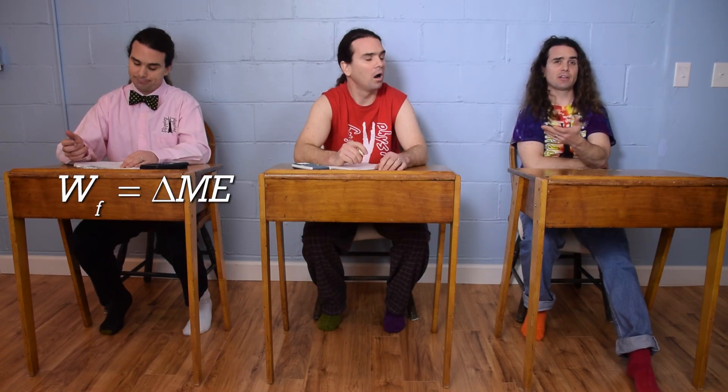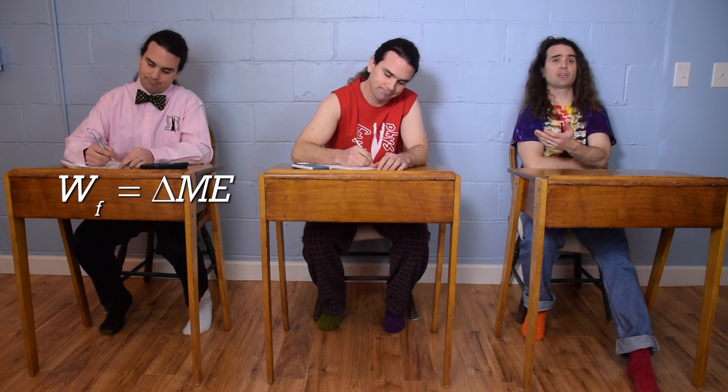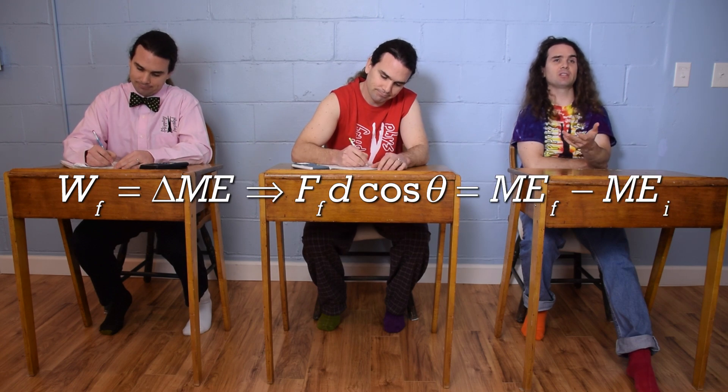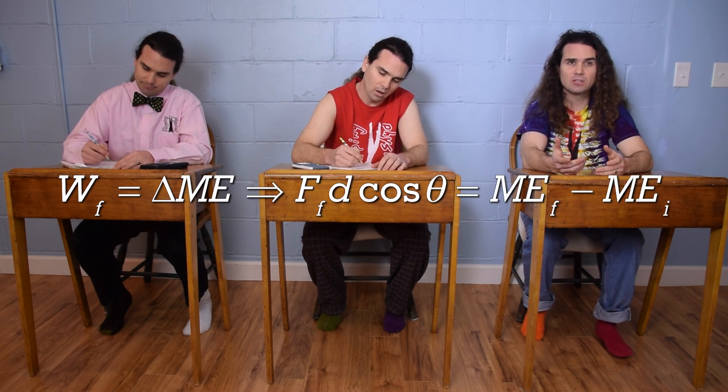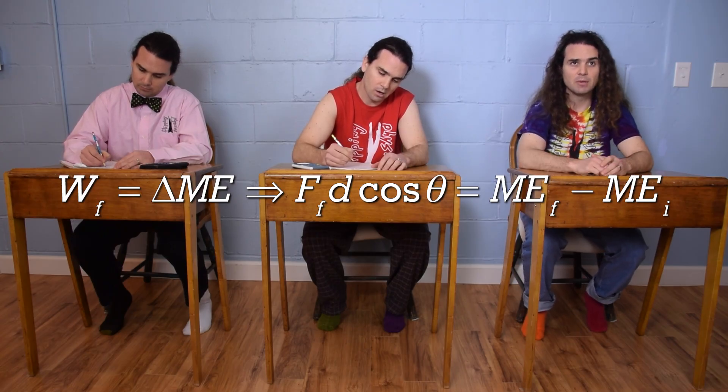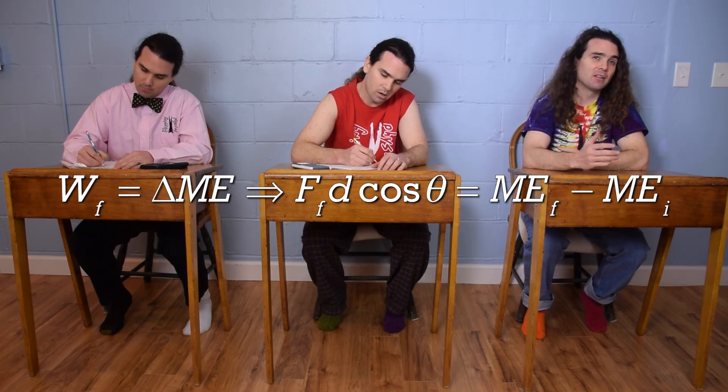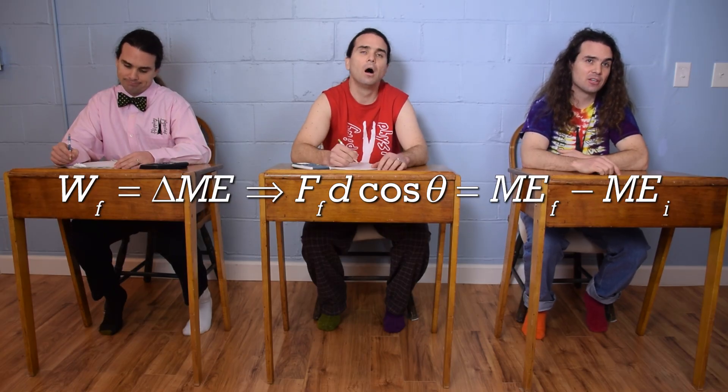Then we go back to the work equation. The work due to friction equals the change in mechanical energy of the system. For the work due to friction, substitute in the force of friction times the displacement, times the cosine of the angle between the force of friction and the displacement, which should be 180 degrees, because the force of friction opposes motion, and that equals the mechanical energy final minus the mechanical energy initial.